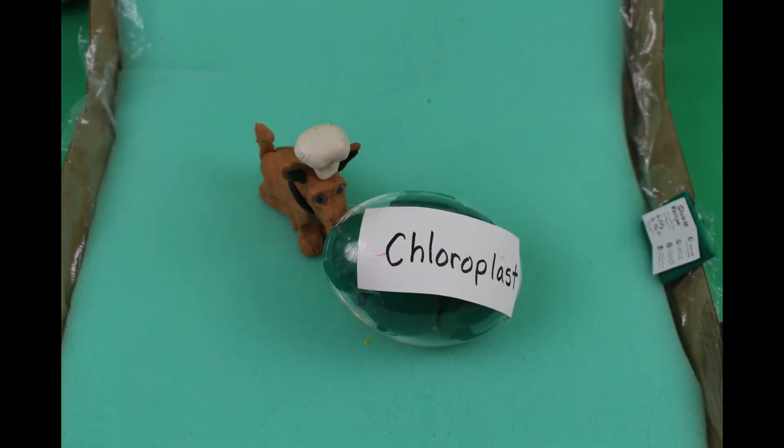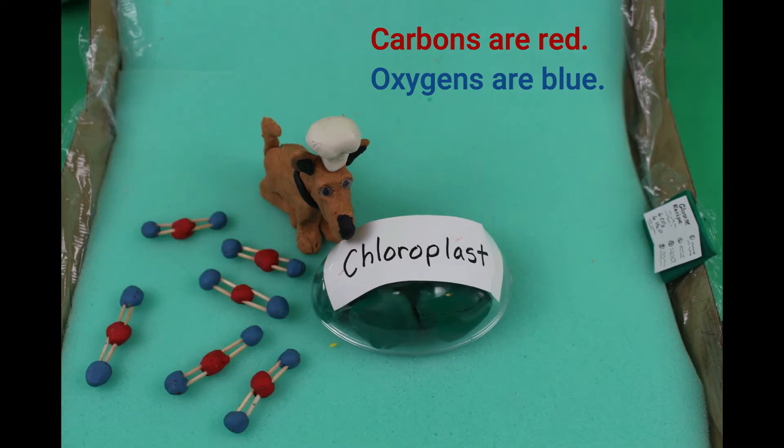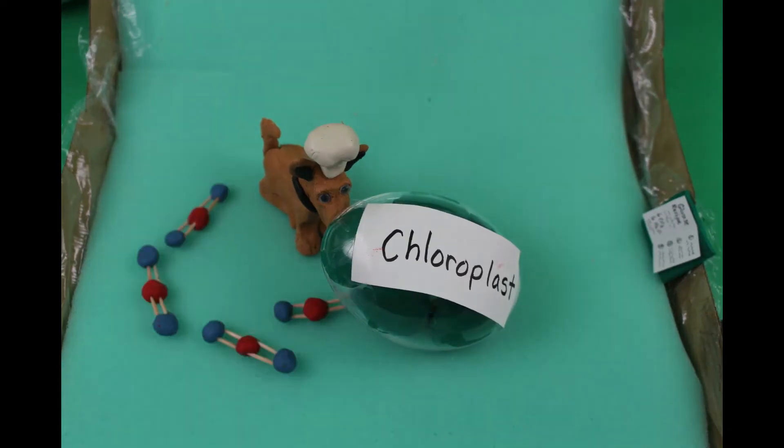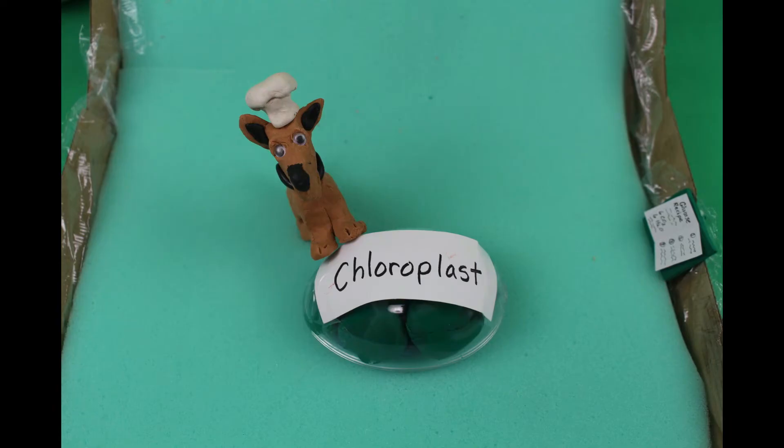Well, that was easy. Mix in some carbon dioxide molecules. CO2 enters the cell through pores in their leaves, so there's plenty of them. Now all we need is sunlight and wow.